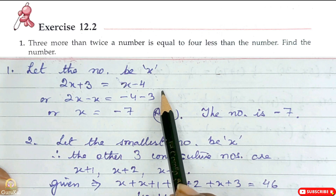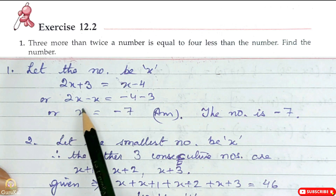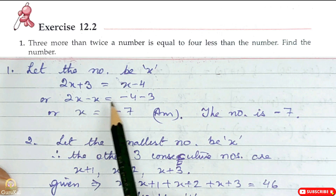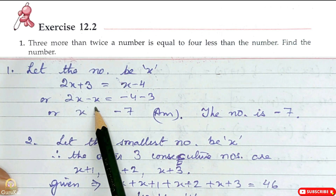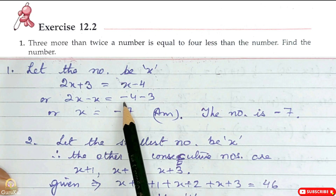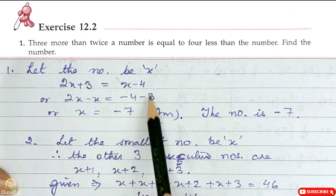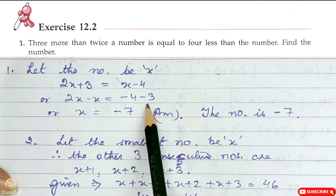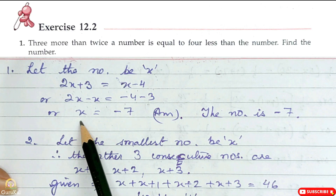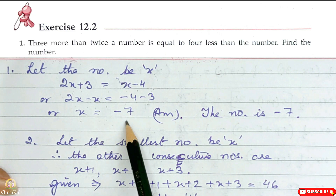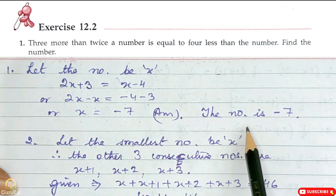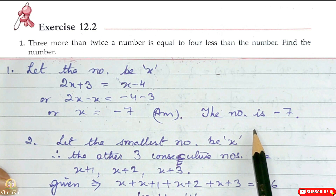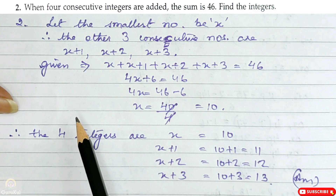Now let us solve. Bring all the x to one side: 2x minus x is equal to minus 4 and minus 3. Hence x is equal to minus 7. So the number is minus 7.